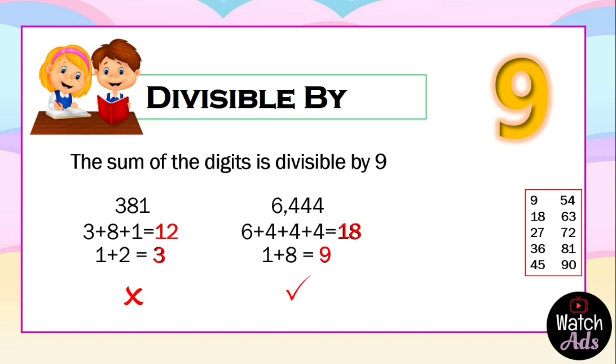Our last example is 217. We add the digits; the answer is 10. 10 is not divisible by 9, but we can still proceed: 1 + 0 = 1. 1 is not divisible by 9, which means 217 is not divisible by 9.